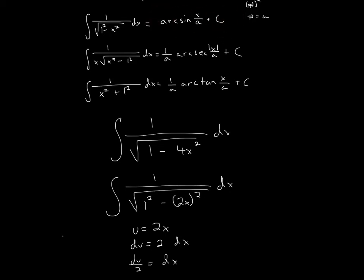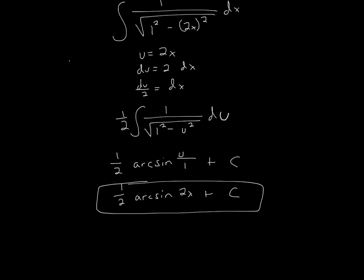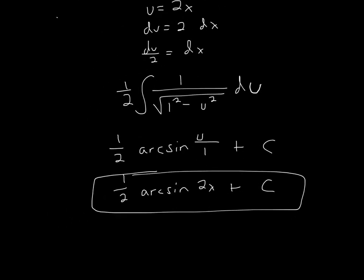So it's arcsine x over a. a is just the number, so it's going to be 1. So 1 half is what was in front. So it's arcsine the letter u over a, which is the number, plus c. But we can't leave it as u. We need to plug in 2x. So we'll have 1 half arcsine 2x over 1, so it'll just be 2x, and then plus c.